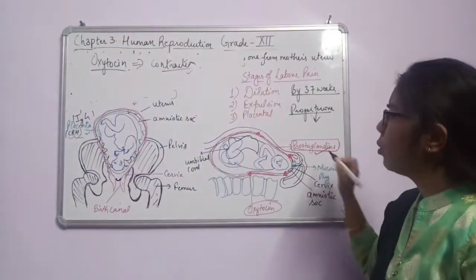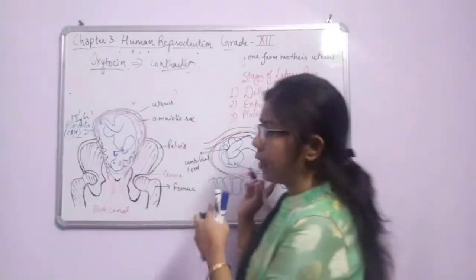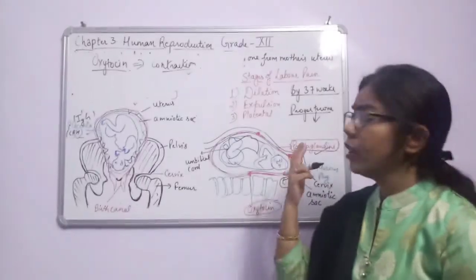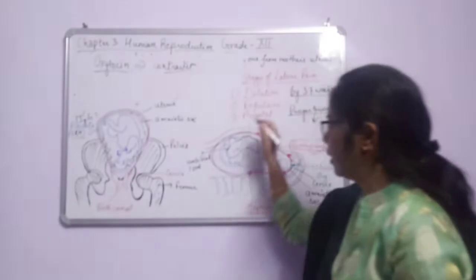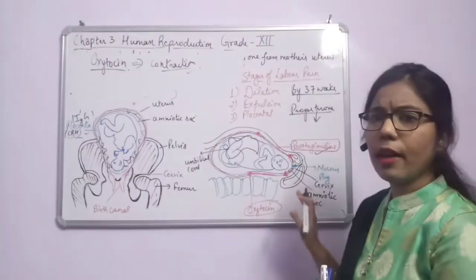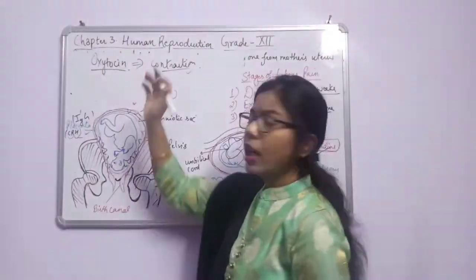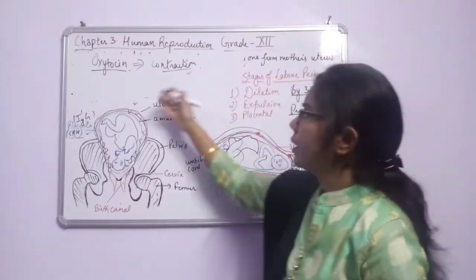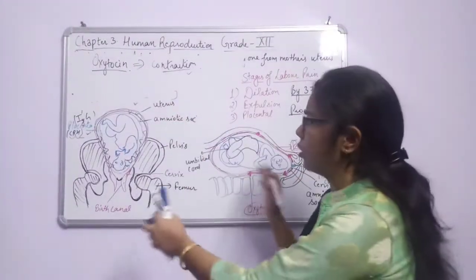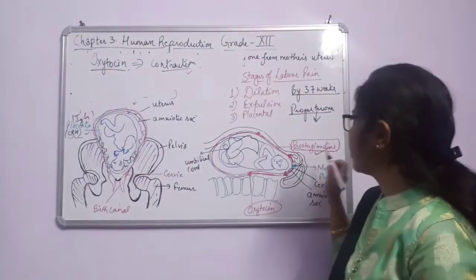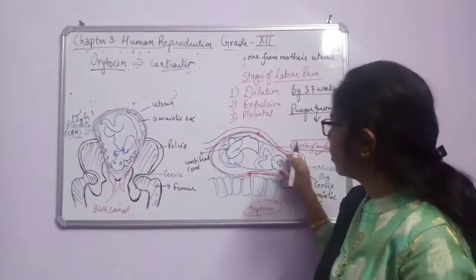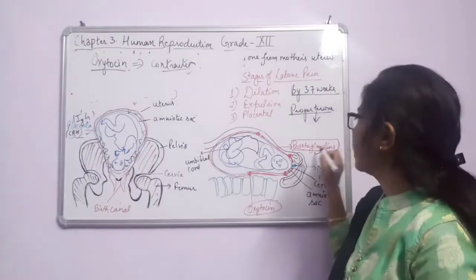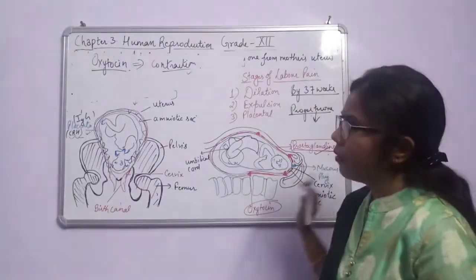Prostaglandins help in the dilation of the cervix. So the two key hormones for parturition are: oxytocin, for contraction of the uterus, and prostaglandins, released due to contraction of the membrane surrounding the fetus, which aids in cervical dilation.